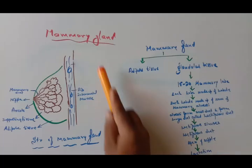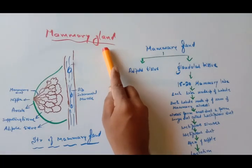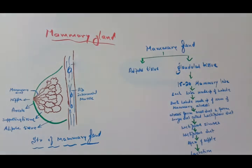Students, let's see about mammary gland. Mammary gland is also called breast. It is a modified sweat gland that produces, secretes, and ejects milk, and it is the characteristic feature of all female mammals. Mammary gland is present in both sexes.